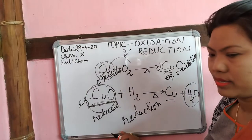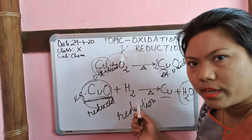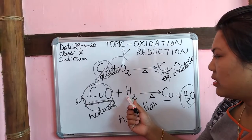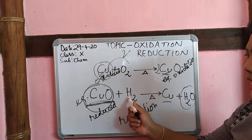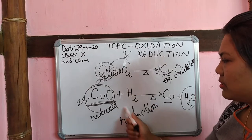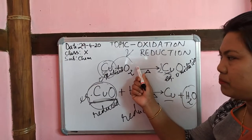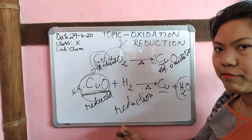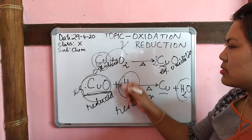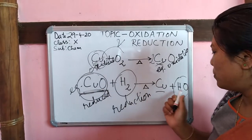If you observe carefully, you can ask: what happened to the hydrogen gas? Look at the other product — this hydrogen combines with oxygen. As mentioned earlier, if a substance combines with oxygen and forms a new product, that reaction is called an oxidation reaction. So in this same example, hydrogen combines with oxygen and forms water.